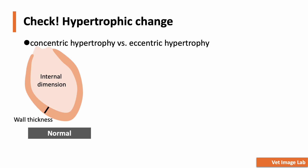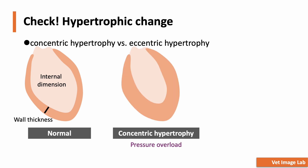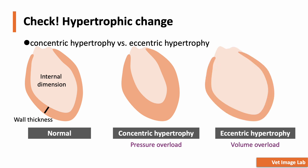Take a look at these illustrations. On the left, we see a normal heart with a balanced wall thickness and internal dimension. In concentric hypertrophy, which occurs due to pressure overload, the heart muscle thickens but the internal chamber size remains the same or gets smaller — commonly seen in conditions like systemic hypertension or aortic stenosis. On the other hand, eccentric hypertrophy develops from volume overload, where the internal chamber enlarges while the wall thickness may appear relatively thinner. This is typical in cases like mitral or aortic regurgitation. By assessing wall thickness and internal chamber dimensions using M-mode, we can objectively evaluate hypertrophy and determine if it's due to pressure or volume overload.